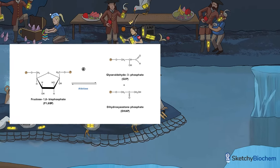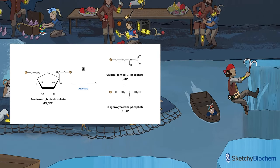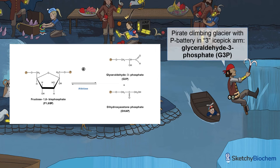Aldolase would be so proud. As a result, two 3-carbon molecules are born. The first is glyceraldehyde-3-phosphate, or G3P, as shown by this climbing pirate with his phosphate-powered 3-icepick arm — meaning there's a phosphate on carbon-3 of G3P. Take note of what he's scaling: a glacier, to emphasize glyceraldehyde.